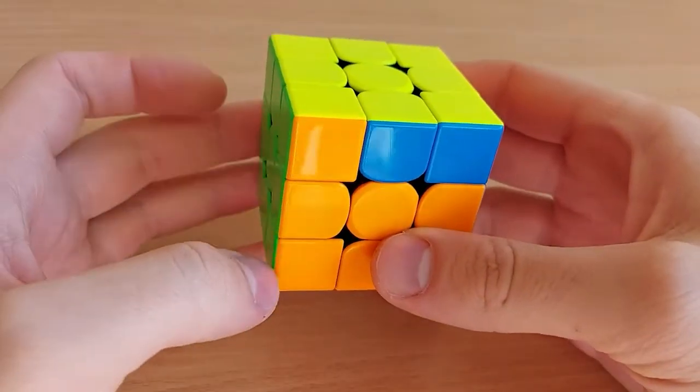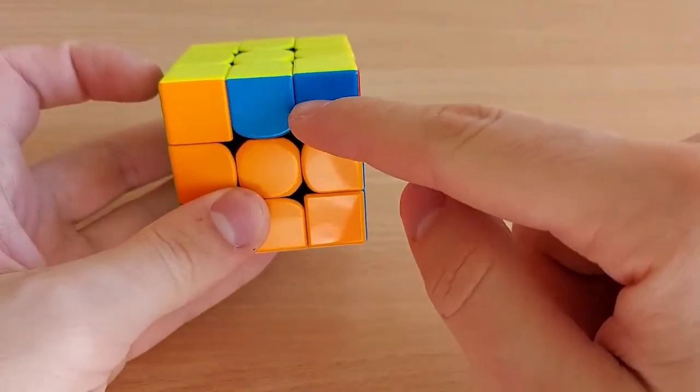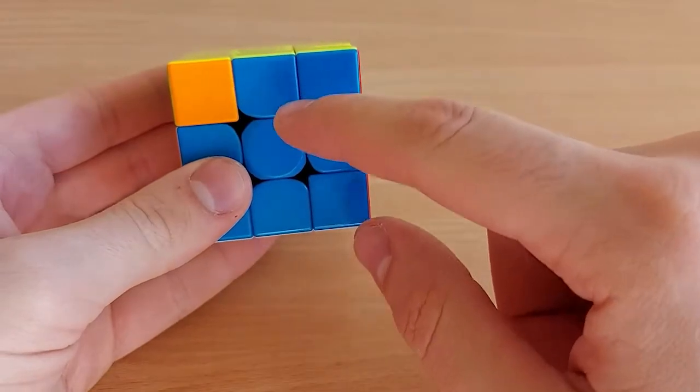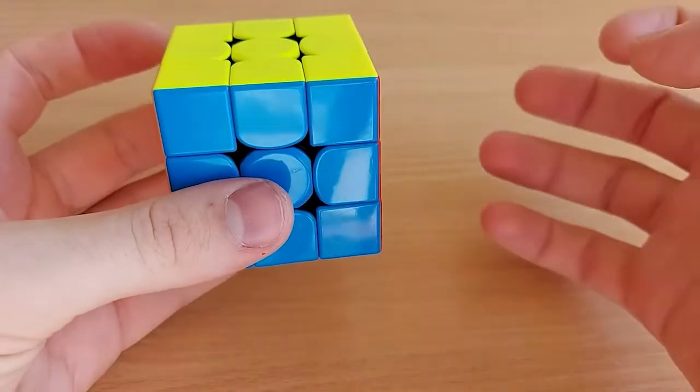For tracking the AUF for JB perm, you need to look to this block. So if this block matches to the center, after this algorithm, you will not need to do any AUF.